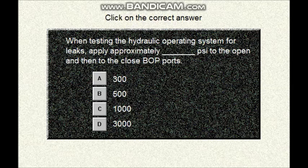Question number fifteen. Click on the correct answer. When testing the hydraulic operating system for leaks, apply approximately: 300 PSI, 500 PSI, 1,000 PSI, or 3,000 PSI to the open and then to the closed BOP ports?